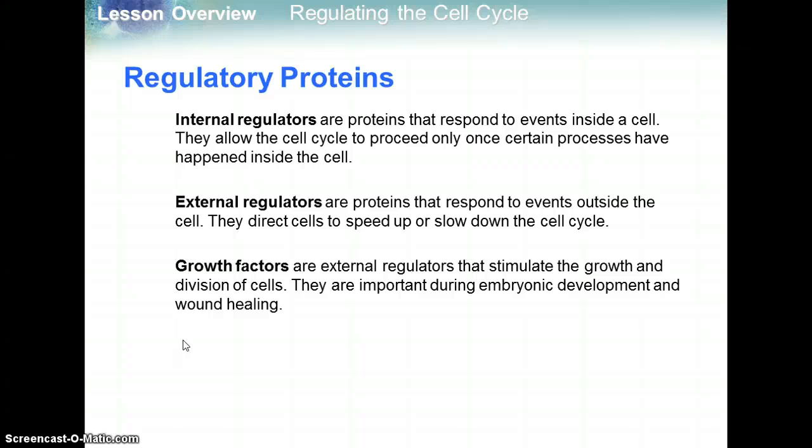That's a good thing — you don't want uncontrolled cell growth, which we'll talk about later as cancer. We want cell growth to only happen when certain processes occur and when we need it. External regulators are proteins that respond to events outside the cell and direct cells to speed up or slow down the cell cycle. Growth factors are external regulators that stimulate the growth and division of cells; they're important during embryonic development and wound healing.